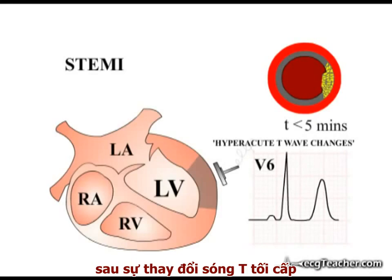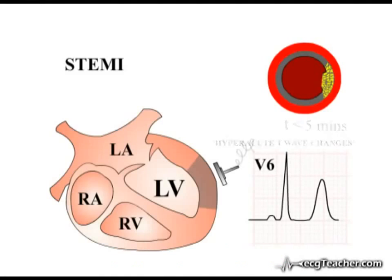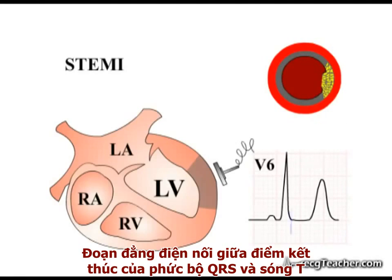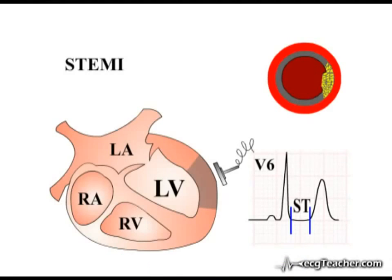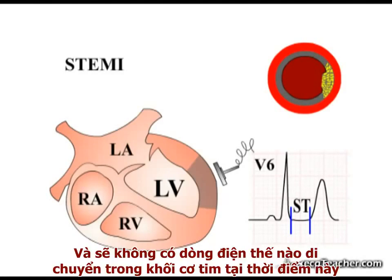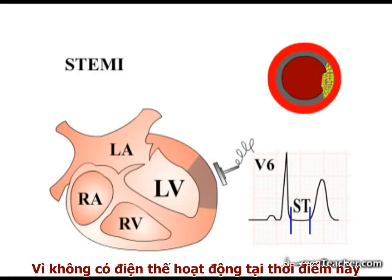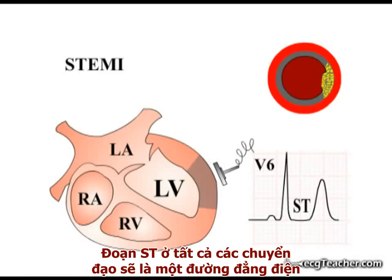In these early stages, hyper-acute T-wave changes are followed by a very characteristic ECG abnormality in the affected leads. The line on an ECG readout connecting the end of the QRS complex and the T-wave is called the ST segment. Normally, all myocytes are depolarised at this time and there is no electrical flow in the cardiac muscle. Under normal circumstances, as there is no electrical activity present at this time, the ST segments in all leads are expected to lie on the isoelectric line.